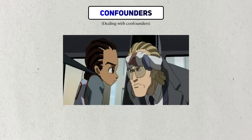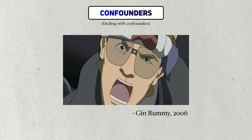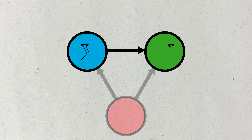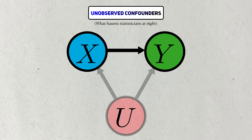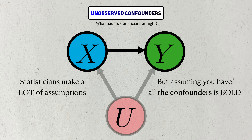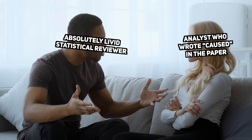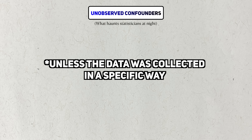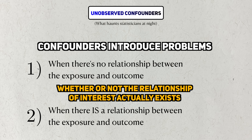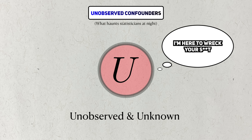As a famous philosopher once said: there are known knowns, known unknowns, but there are also unknown unknowns — things we don't know that we don't know. No matter how much data you collect, the specter of unobserved confounders will always haunt your analysis. We make a lot of assumptions in statistics, but the assumption that you have all the confounders is a pretty strong one — so much so that no self-respecting statistician will declare a significant association to be causal in a manuscript, unless they know the data was gathered in a specific way.